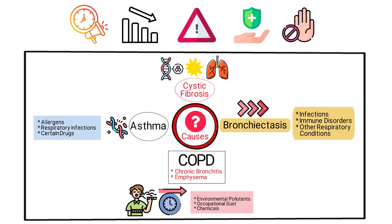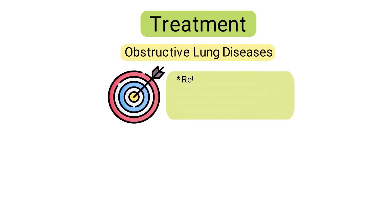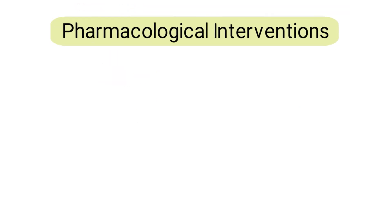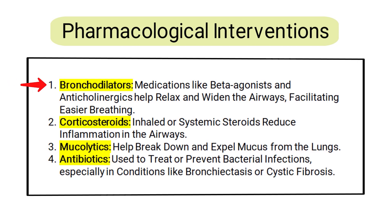Treatment for obstructive lung diseases aims to relieve symptoms, improve lung function, enhance the quality of life, and reduce the risk of exacerbations. This includes pharmacological interventions such as bronchodilators — medications like beta agonists and anticholinergics that help relax and widen the airways, facilitating easier breathing — corticosteroids, which can be inhaled or systemic steroids that reduce inflammation in the airways, mucolytics, which help break down and expel mucus from the lungs, and antibiotics, used to treat or prevent bacterial infections, especially in conditions like bronchiectasis or cystic fibrosis.